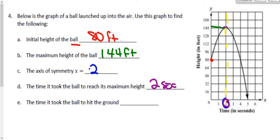And the last question here is the time it took the ball to hit the ground. So the ball hits the ground right over here at 5 seconds. There we go. Alright, let's go ahead and take a look at question 5.